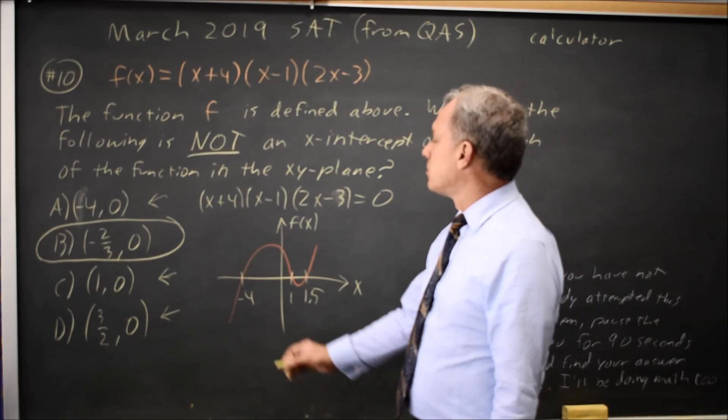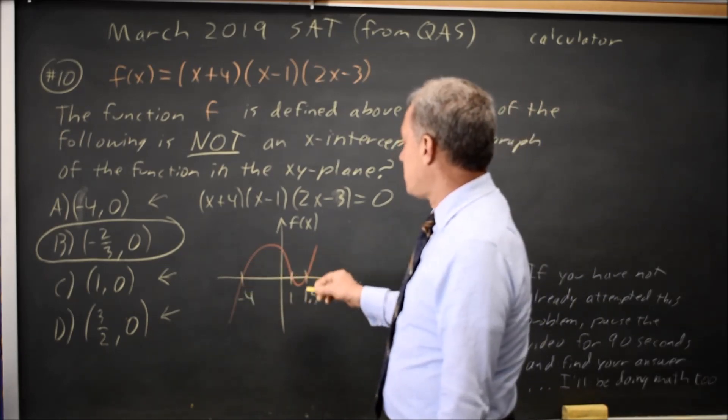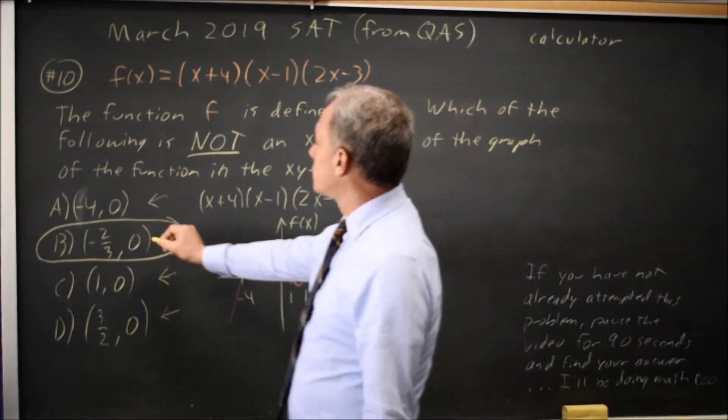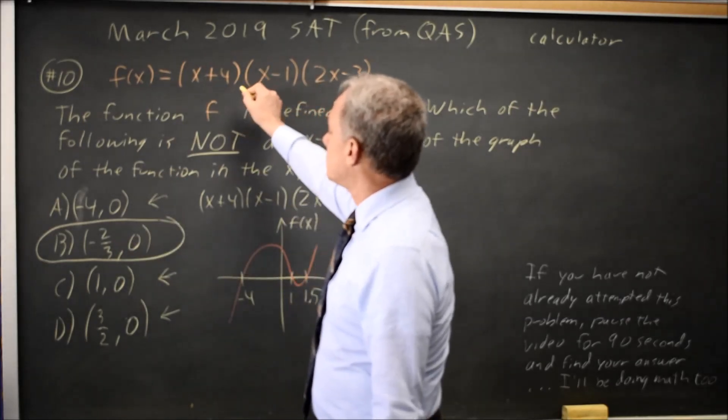The point that's not an x-intercept is the one where the graph does not intersect the x-axis. It's also the one where if you put this value in for x, you don't get zero.